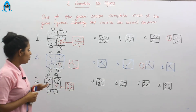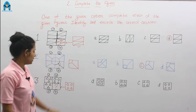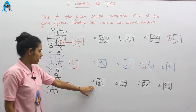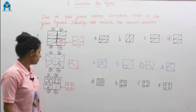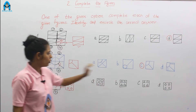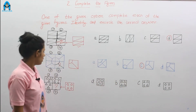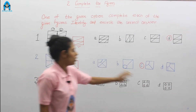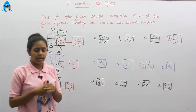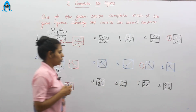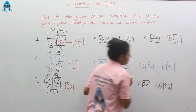Now look at the options — which option is the correct option? Option A? No. Option B? No. Option C? No. Option D? Yes. Our correct option is option D.